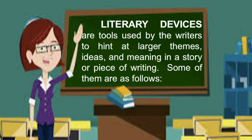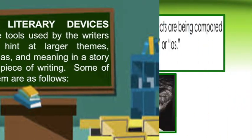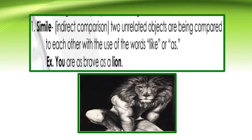Literary devices are tools used by writers to hint at larger themes, ideas, and meaning in a story or piece of writing. Some of them are as follows. The first is simile, which means two unrelated objects are being compared to each other with the use of the words 'like' or 'as.' For example, you are as brave as a lion.